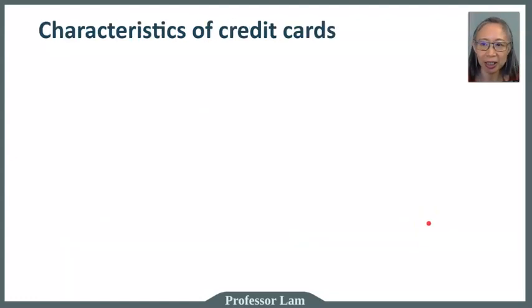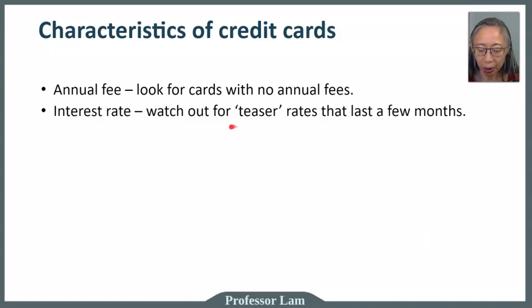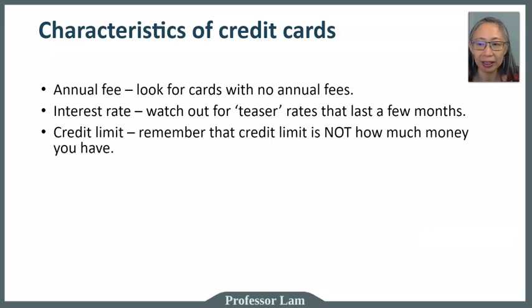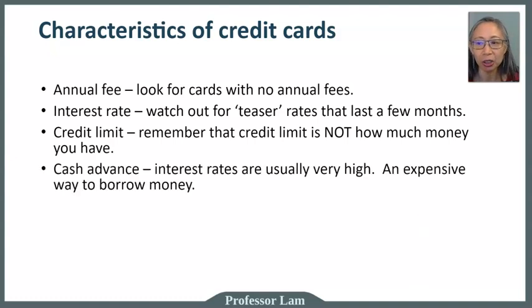When you are choosing a credit card, these are the characteristics that you want to look for. The first is annual fee — there are many cards that don't charge an annual fee, and those are usually a good choice for most consumers. Another one is the interest rate. Here you want to watch out for what we call a teaser rate, also called an introductory rate. For example, the first six months you have an introductory rate of zero percent, and then it goes up to 25 or 30 percent. The third is the credit limit — this is how much the card company will allow you to spend. Remember, the credit limit is the amount of loan you are taking out; it's not money you have. Cash advance is another option, but the interest rate is usually very high, so this is not a good way to borrow money.